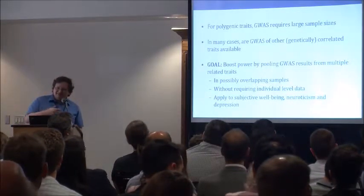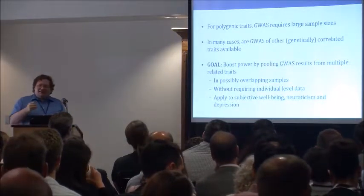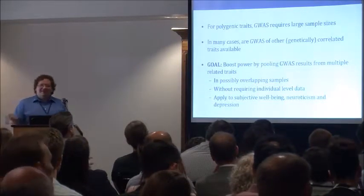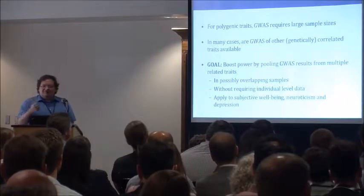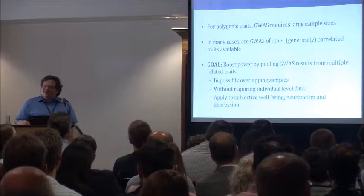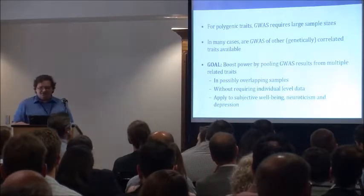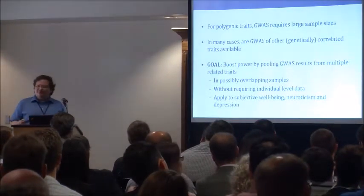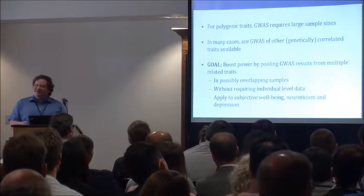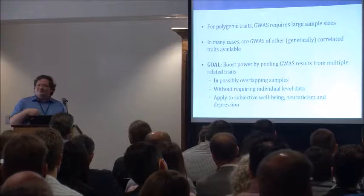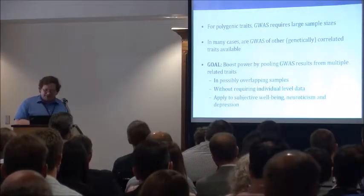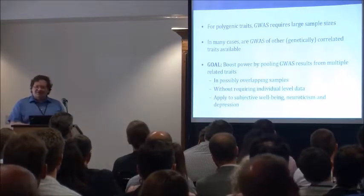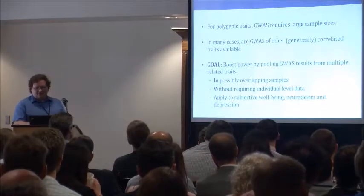This leads us to the idea — not entirely novel — that given these related GWASs of correlated phenotypes, and the considerable effort that has gone into collecting those related samples, it would be great to borrow power from genetically related traits to push forward information on our trait of interest. In the context of MTAG, we're going to do this specifically in the case where we may have overlapping samples between different GWASs and where we don't have access to individual-level data for a joint analysis. I'll talk through the MTAG method and then the applied results in neuroticism and depression.